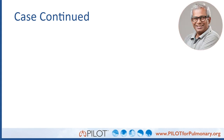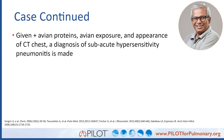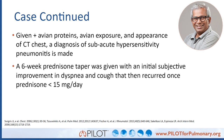Given the positive avian proteins, the exposure history, and the CT findings, we confidently make the diagnosis of subacute hypersensitivity pneumonitis. We start him on a six-week prednisone taper, and he has an initial subjective improvement — his dyspnea and cough are much better. However, once his prednisone drops below 15 milligrams per day, his symptoms begin to recur.